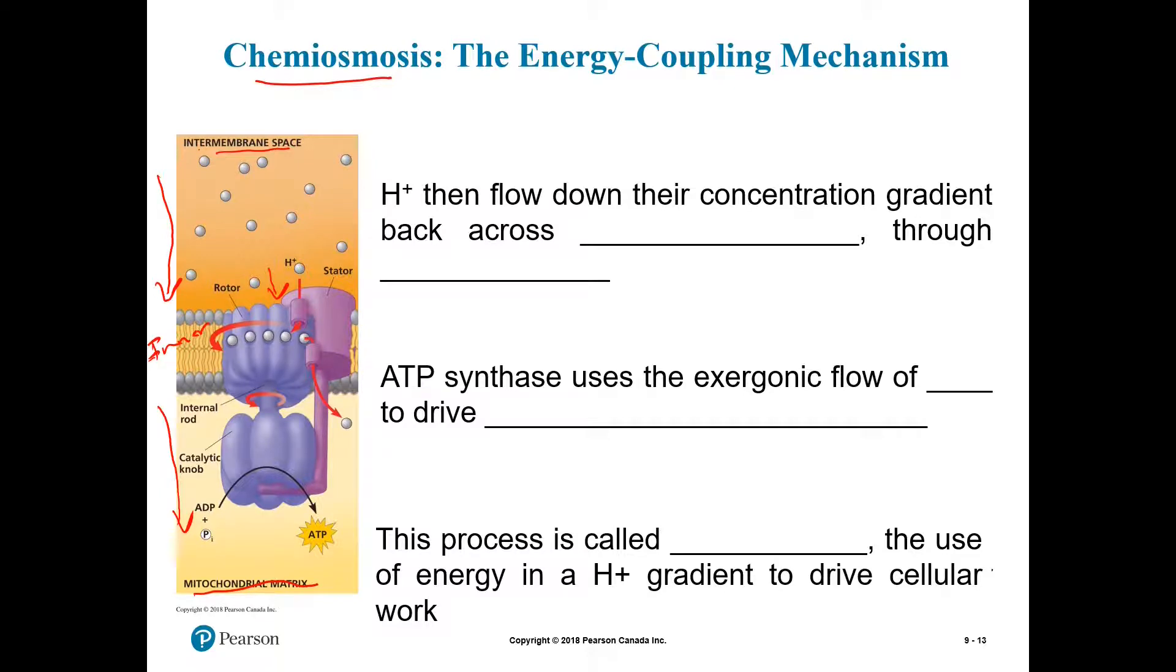And while they move, they use the exergonic flow. Those hydrogen protons are producing energy to turn the ADP into ATP. This conversion. And finally, when you take not only hydrogen protons but any ions used to cross a membrane through diffusion, this process is called chemiosmosis.